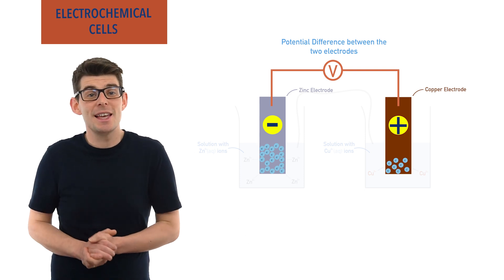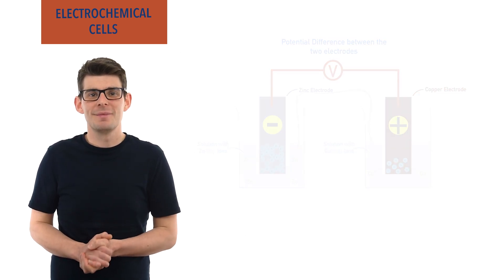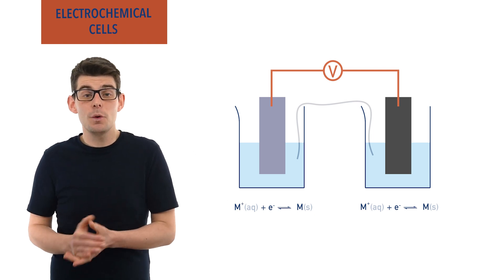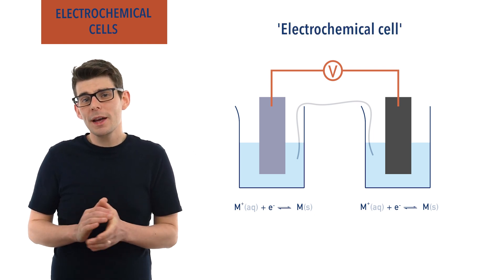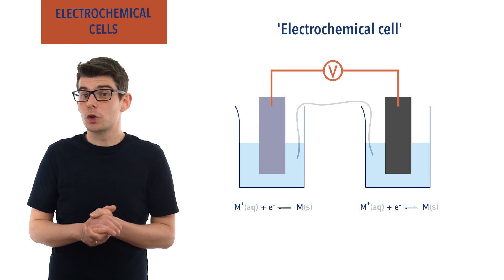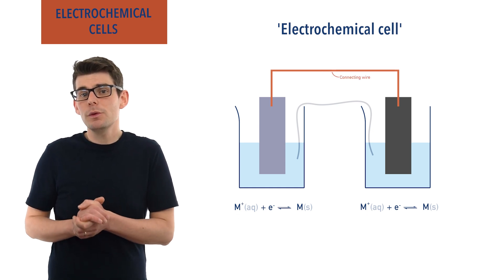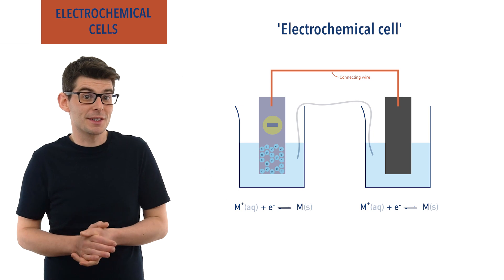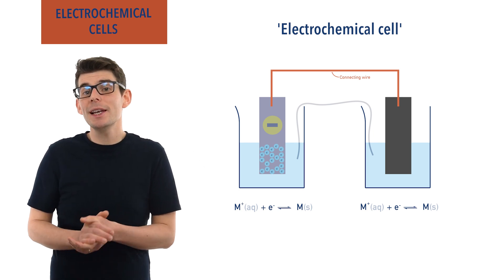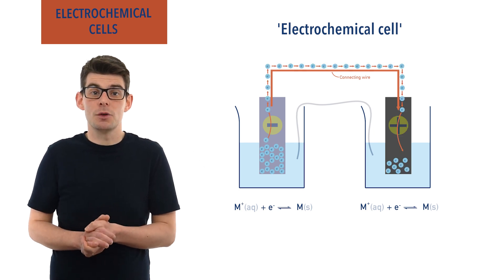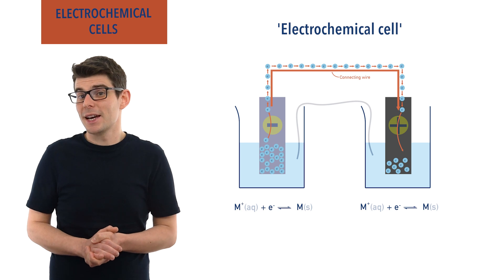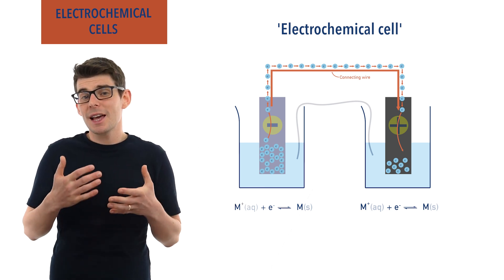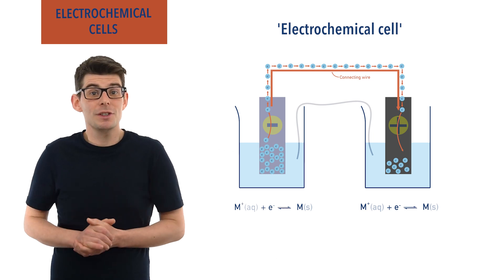When two half cells are connected together, an electrochemical cell is formed. If a wire is connected from one electrode to the other, electrons will flow from the electrode with the more negative potential — with a greater surplus of electrons — to the electrode with the more positive potential — with a smaller surplus of electrons. This flowing of electrons means an electrical current is produced — electricity.